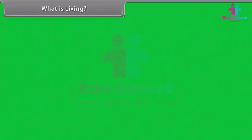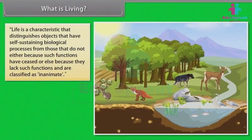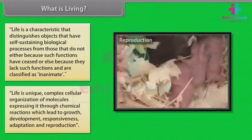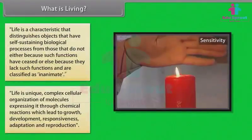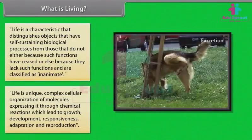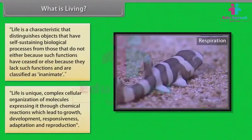Life is a characteristic that distinguishes objects that have self-sustaining biological processes from those that do not, either because such functions have ceased or else because they lack such functions and are classified as inanimate. Life is a unique complex cellular organization of molecules expressing it through chemical reactions which lead to growth, development, responsiveness, adaptation, and reproduction.